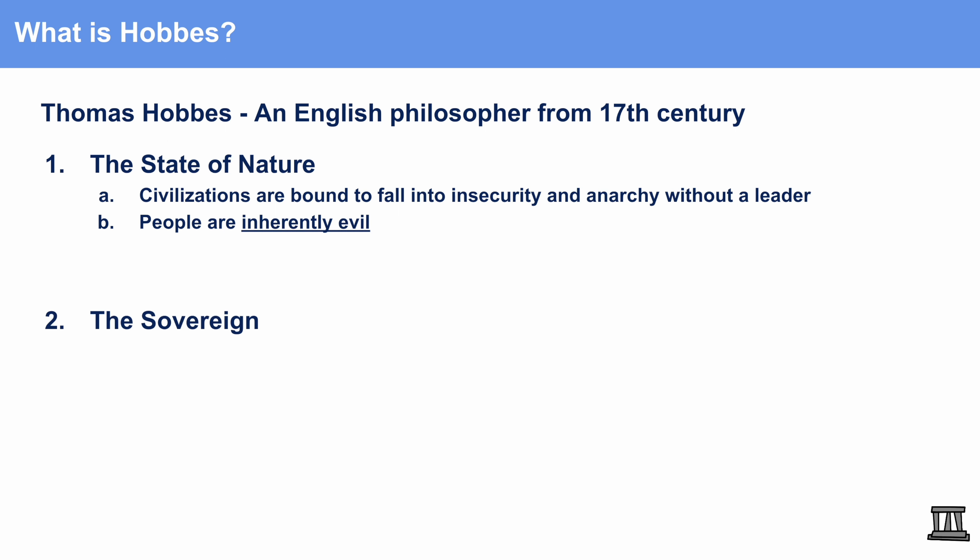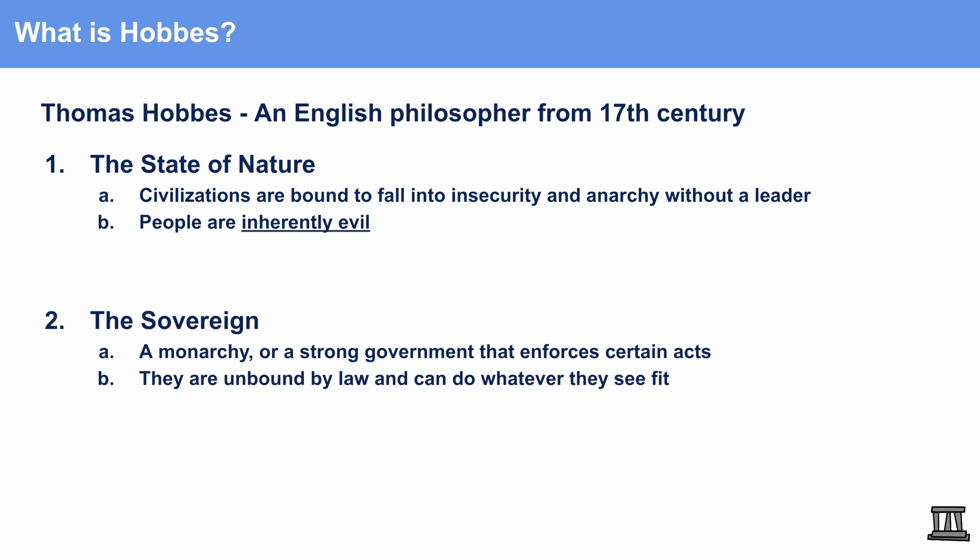The second idea for Hobbes is known as the sovereign — a fancy word for a leader or even a monarchy. This monarchy is a strong government that enforces certain acts. The sovereign is never actually bound by the laws it makes itself. In other words, the sovereign can do whatever it sees fit for the benefit of its citizens. Although this could be beneficial, it's problematic if the sovereign is evil or corrupt, since the laws don't apply to them. This is the downside of having a sovereign so powerful that it can't be controlled or held accountable.